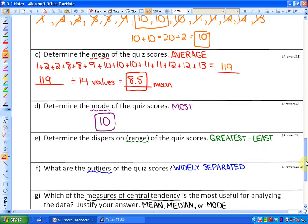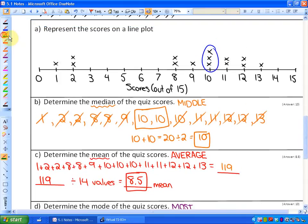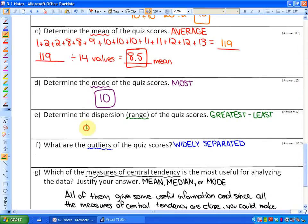E says determine the range of the quiz scores. So I just take the highest score and subtract the lowest score. So my range is between thirteen and one, and thirteen minus one is equivalent to twelve, so there's my range.